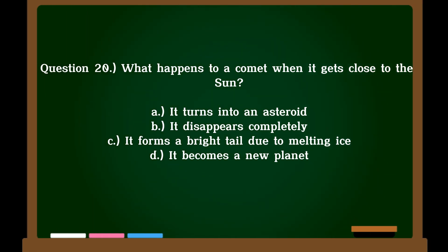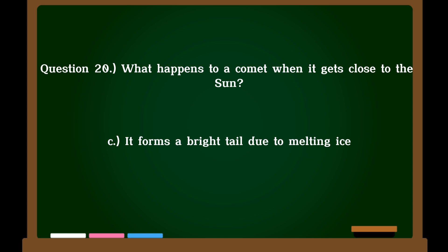Question 20. What happens to a comet when it gets close to the sun? A. It turns into an asteroid, B. It disappears completely, C. It forms a bright tail due to melting ice, D. It becomes a new planet. Correct answer: C. It forms a bright tail due to melting ice.